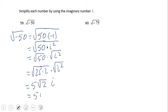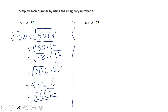Whenever we write an imaginary number like this, we like to place the i between the radical and the natural number. So the final answer for number 59 — the square root of negative 50 — is 5i square root of 2. Go ahead and try number 60.